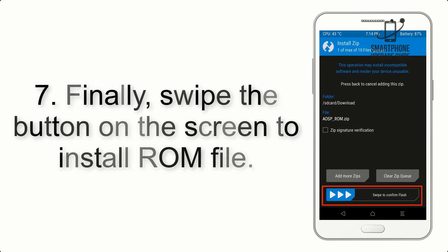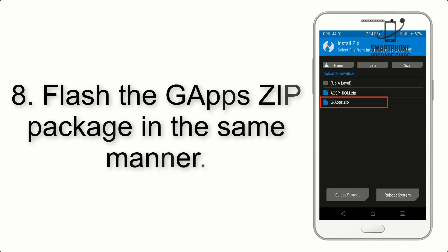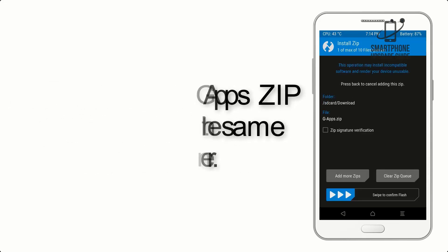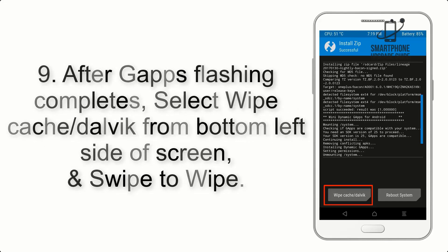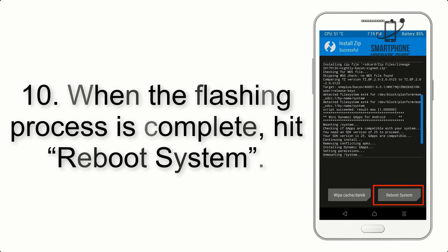Step 7: Swipe the button on the screen to install the ROM file. Step 8: Flash the GApps zip package in the same manner. Step 9: After GApps flashing completes, select Wipe Cache and Dalvik from the bottom left side of the screen and swipe to wipe.